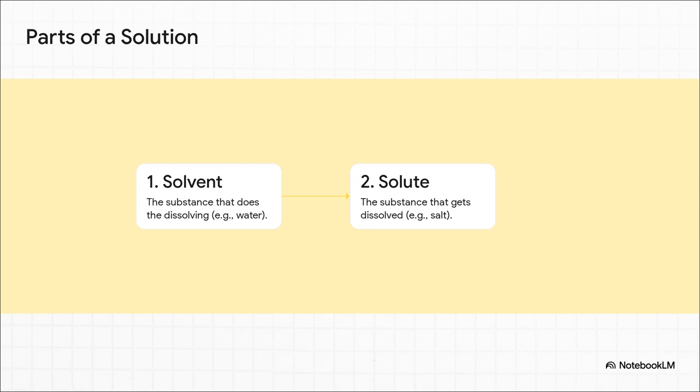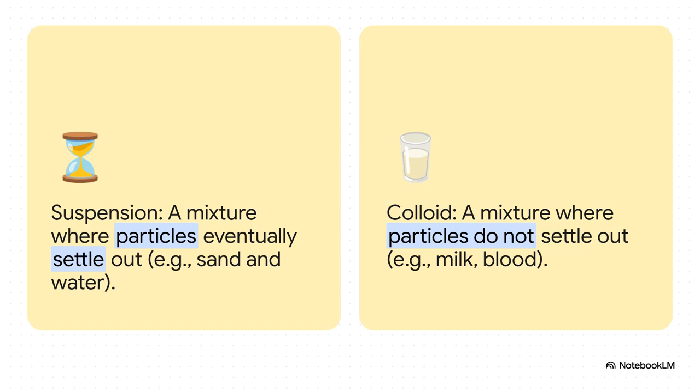Now, the most common type of homogeneous mixture is what we call a solution. And it's got two parts. The solvent, which is the thing doing the dissolving, and the solute, which is the thing that gets dissolved. So in salt water, it's super simple. Water is the solvent, and the salt is the solute. But there are other types, too. A suspension is when the particles are big and heavy enough that they eventually settle to the bottom. But a colloid is a special case where tiny little particles stay suspended and don't settle out. Things like milk or even blood are actually colloids.